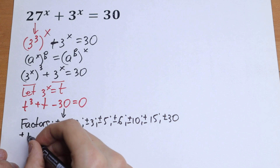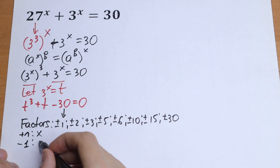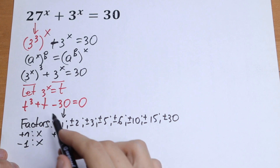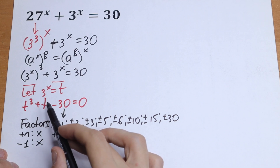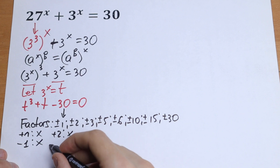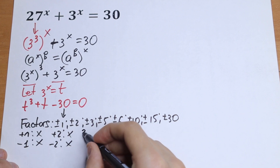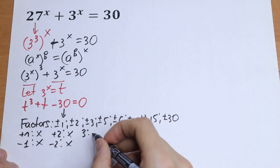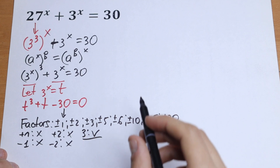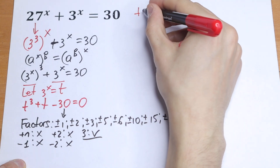Let's check quickly. For t equals 1: 1 plus 1 minus 30 — not good. Minus 1 is not good either. For t equals 2: 8 plus 2 minus 30 — not good. Minus 2 is also not good. Let's check t equals 3: 27 plus 3 minus 30 — this is good for us. So we can factor out t minus 3.